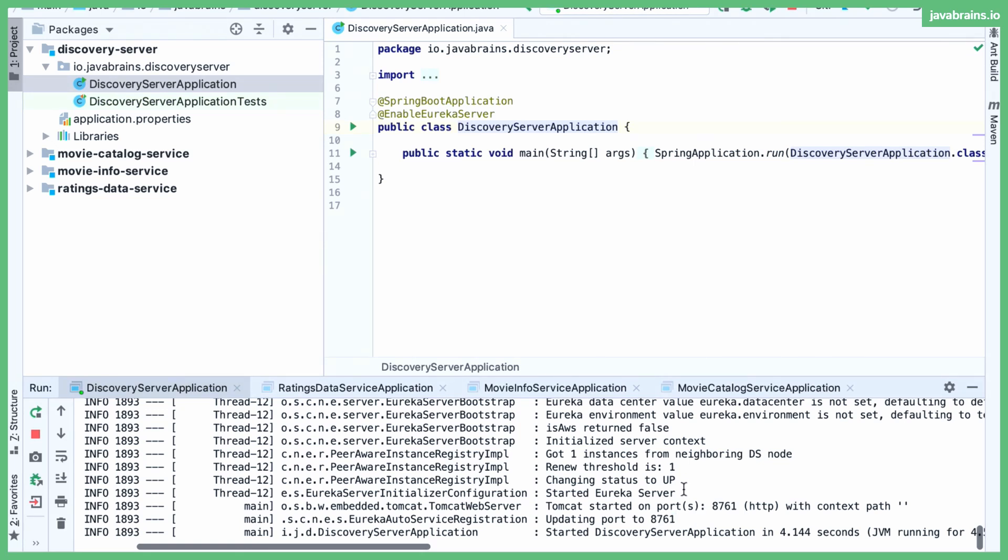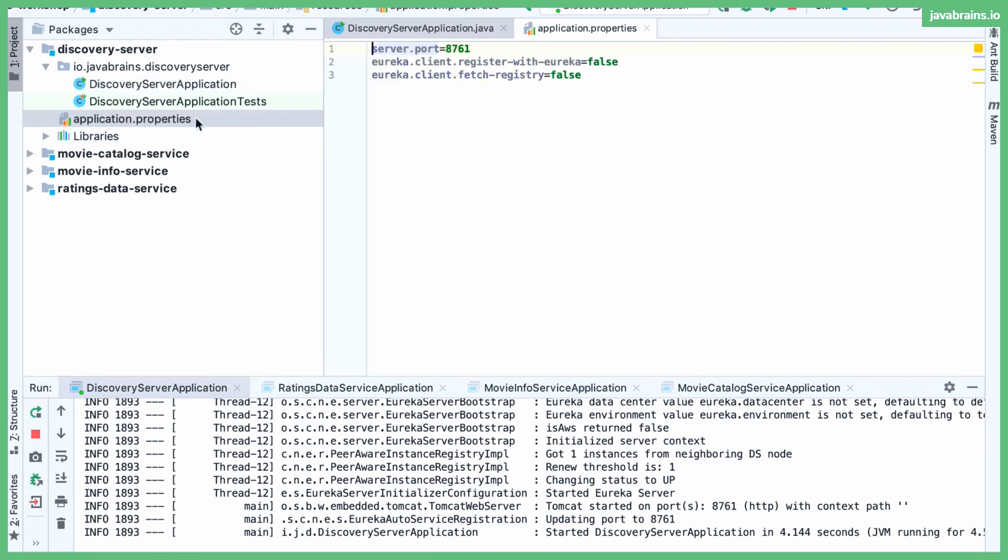Now, how does it get 8761? That is in application.properties. I have set server.port as 8761 for Eureka. And that's why Eureka registers with that port. And that is the discovery server.